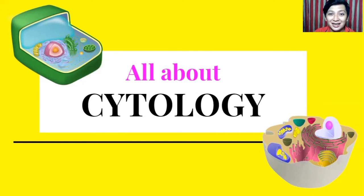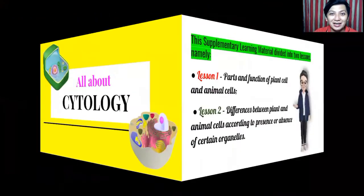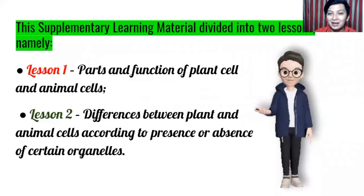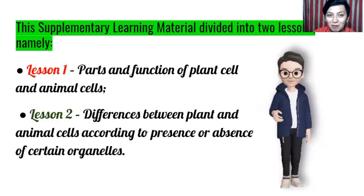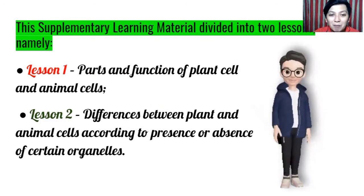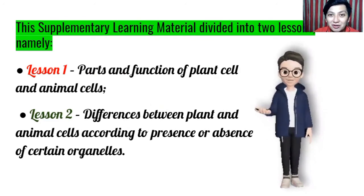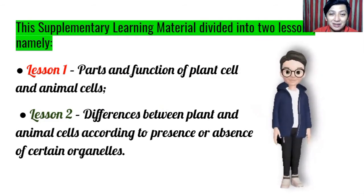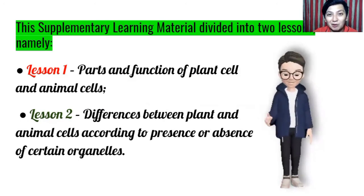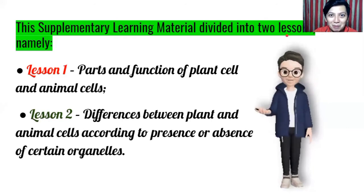The study of cells is cytology. In this supplementary learning material, we will discuss two lessons: number one, parts and functions of plant cells and animal cells; and for lesson number two, differences between plant and animal cells according to their presence or absence of certain organelles. Those are the two lessons we are going to talk about today.